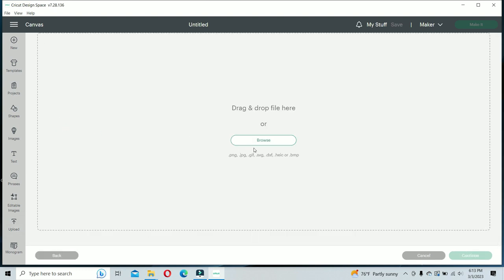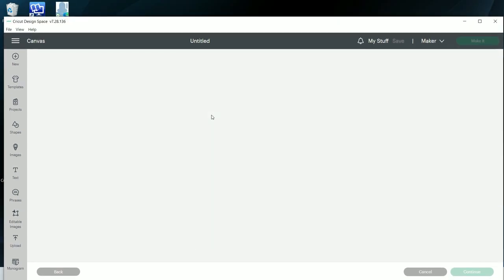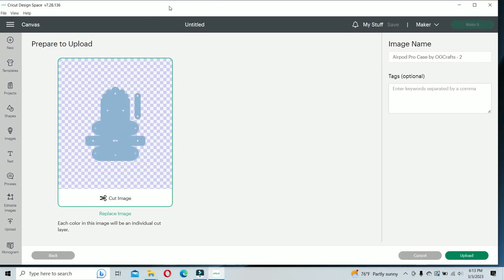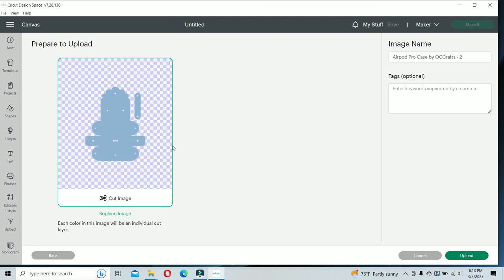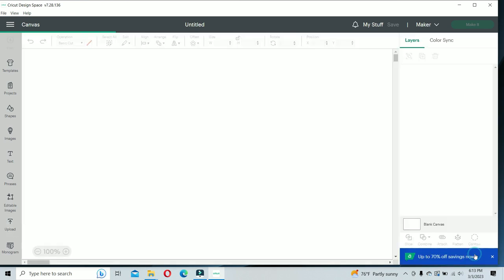I'm going to drag my image in from my desktop. Now I'm going to go to the bottom right, click upload, click on the image, go to the bottom right, click on add to canvas.